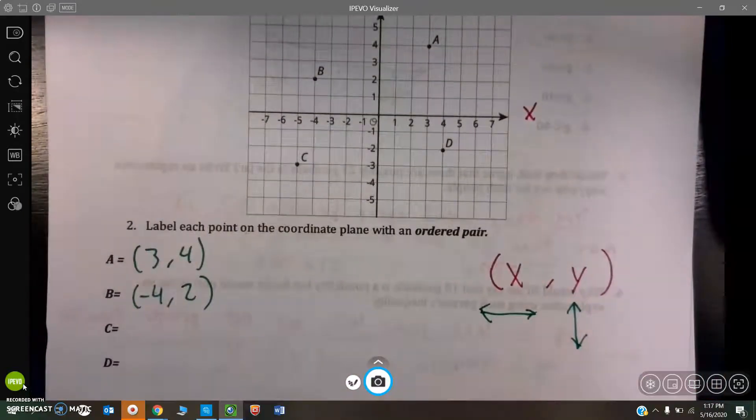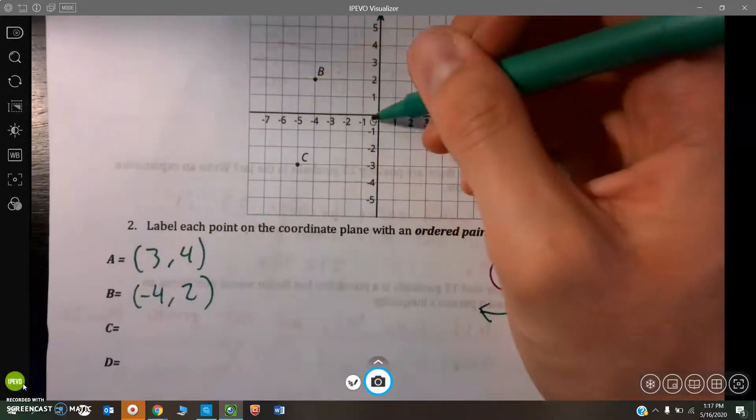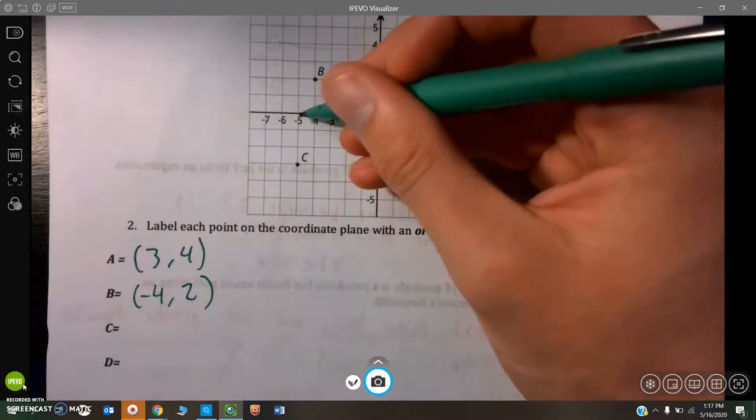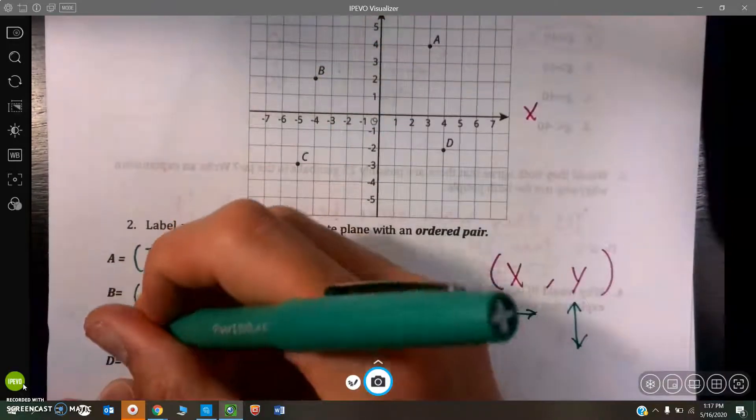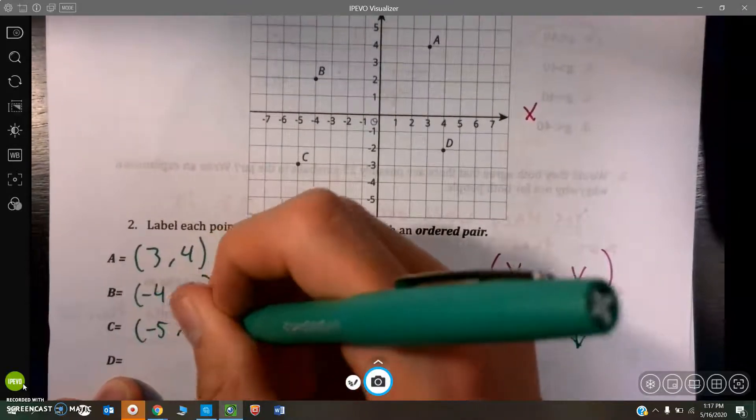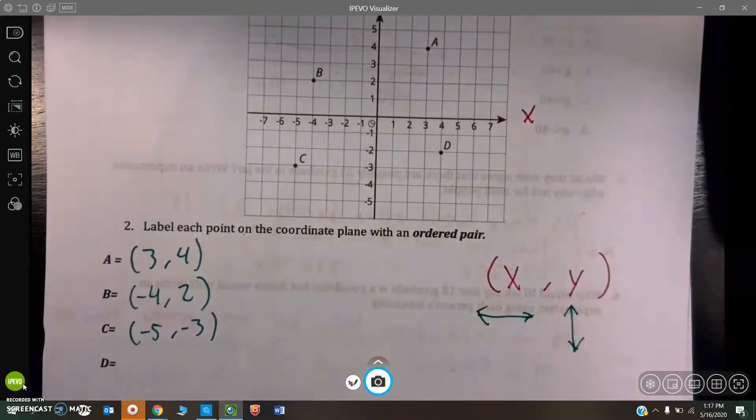And then C is, once again, to the left. It looks like it's to the left five units. Negative one, negative two, negative three, negative four, negative five. And then it's down three. So, this one actually has two negatives. It's negative five, left three, or sorry, left five, down three.